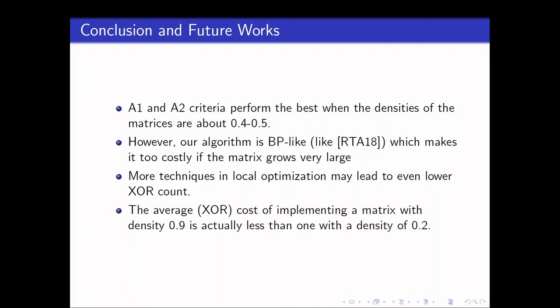Lastly, the average cost of implementing a matrix with a density of 0.9 is actually less than one with a density of 0.2. Most of the ciphers out there use matrices that are lightweight in nature because of their low implementation cost. However, with the improvements in algorithms for linear programs like this, we may actually widen the search for MDS matrices or near MDS matrices in order to use in ciphers. With that, I conclude my presentation.